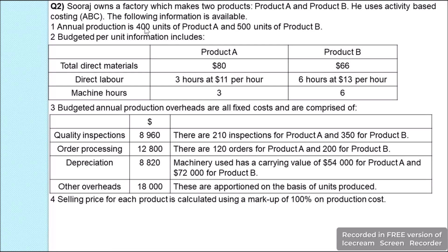Annual production is 400 units of product A and 500 units of product B. Budgeted per unit information: total direct materials for product A is $80 and for product B is $66. Direct labor is 3 hours at $11 per hour for product A and 6 hours at $13 per hour for product B. Machine hours are 3 for product A and 6 for product B.